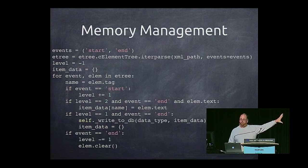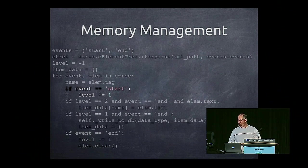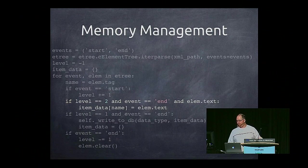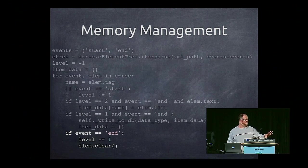Here's the code for how I read that and load one vehicle sale at a time into the database. First, I say I want to look at the start and end events — whenever I get to a start or end of an XML tag, let me know. I iterate over the tree, and every time it comes to a start or end, it lets me know. I grab the name for the tag. If it's a start, I've moved up a level in the XML, so I increase my level by one. When I get to my second level at the end, I know I've got a full read of that element, so I get the text and save it into a dictionary. When I move back down to level one at the end, I take that dictionary with all my key-value pairs, write it to the database, and reset my dictionary. Whenever I get to the end of any element, I run clear, which flushes it out of memory.